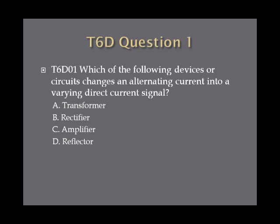Question 1. Which of the following devices or circuits changes an alternating current into a varying direct current signal? A. Transformer, B. Rectifier, C. Amplifier, or D. Reflector?